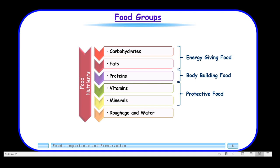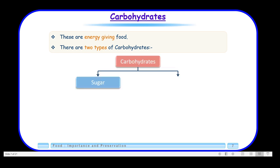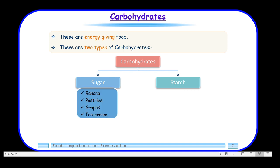The first nutrient is carbohydrates. These are energy-giving food and they are of two types. Carbohydrates are present in sugar and starch. Bananas, pastries, grapes, and ice creams all contain carbohydrates — they contain sugar. Starch is found in wheat, rice, potato, and sweet potato.